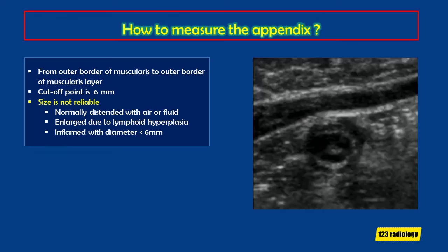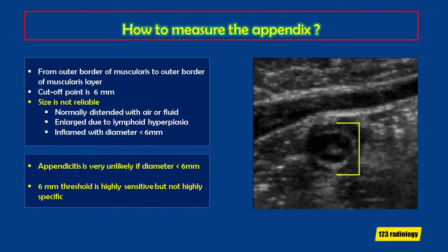Always measure the appendix from the outer border of the muscularis layer to the other side. The literature cut-off point is 6 mm, but this is not fully reliable — the appendix may be normally distended with air or fluid with no secondary signs of inflammation and the patient is asymptomatic. In children, the appendix can be large due to lymphoid hyperplasia. The appendix may be less than 6 mm but surrounding tissues show secondary signs of appendicitis. The 6 mm threshold is highly sensitive but not highly specific.